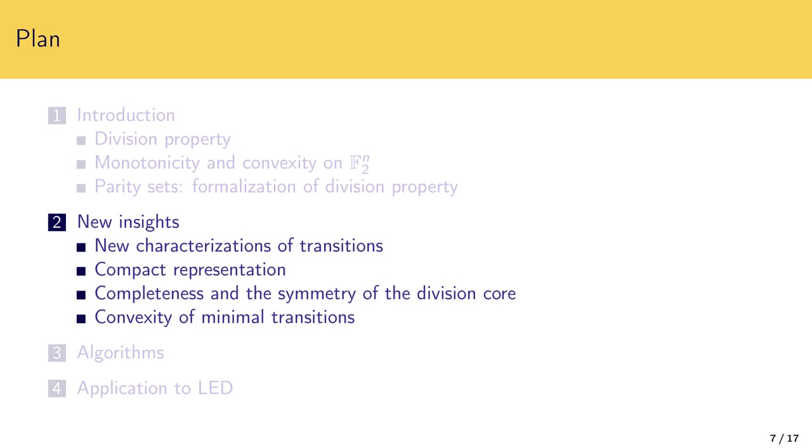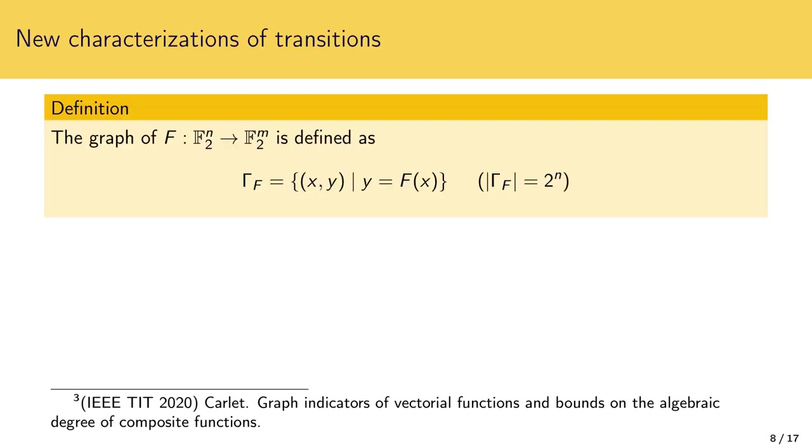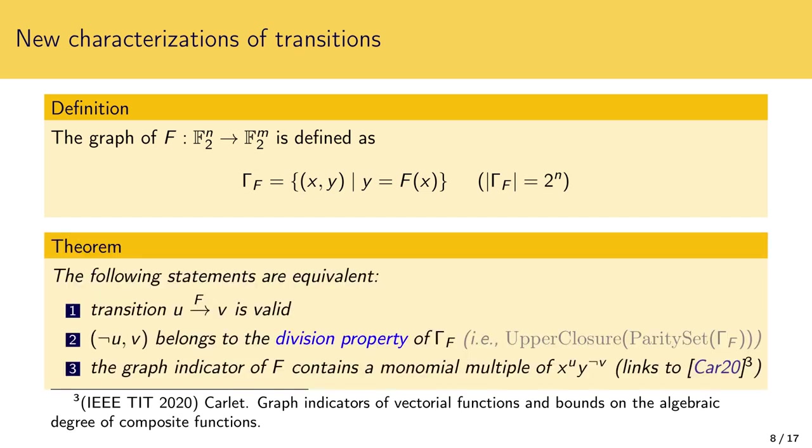Now I will describe new insights into division property transitions including new characterizations leading to compact representations and also exhibiting explicitly convexity of minimal transitions. First recall the definition of the graph of a vectorial boolean function which is simply the set of all valid input-output pairs of the function. One of the main results of this work provides new characterizations of valid division property transitions. In particular it turns out that the set of valid transitions through f coincides up to negating the input part with the division property of the graph of f as a set. It is an interesting connection between the division property of a set and transitions of such division properties.